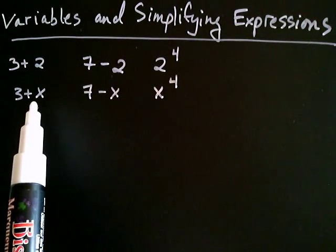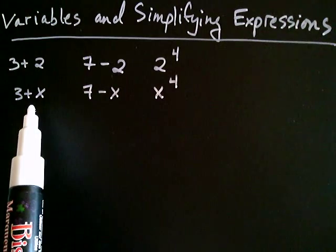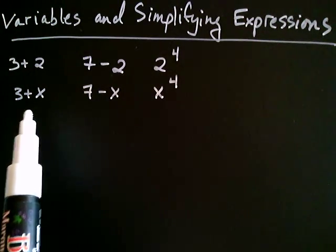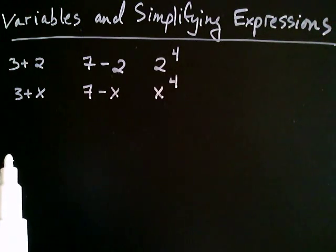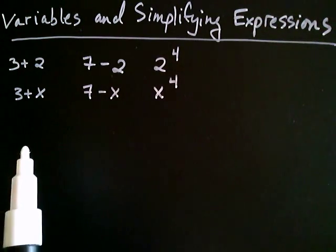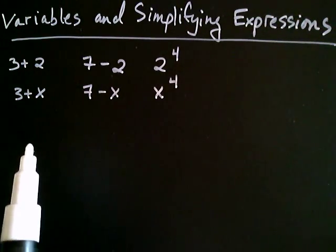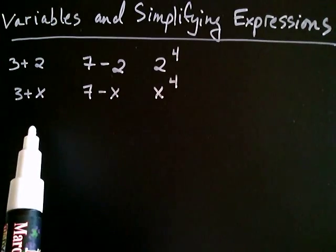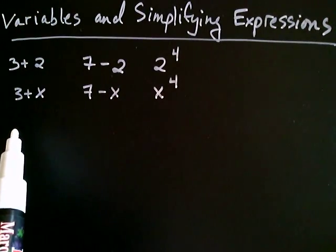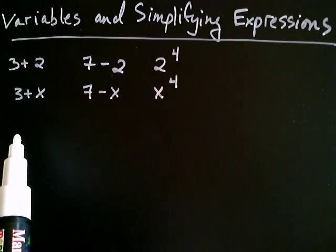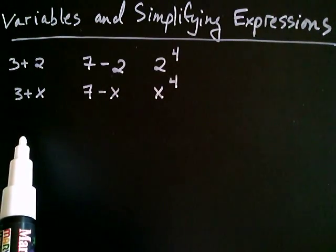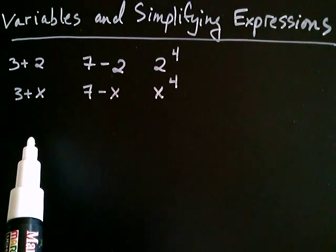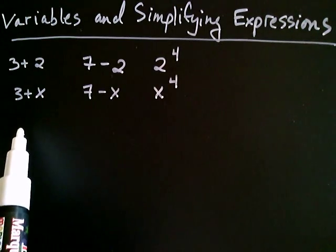So a variable is a number whose value you don't know. Now it just so happens that sometimes you find yourself in situations that order of operations wouldn't let you get out of.